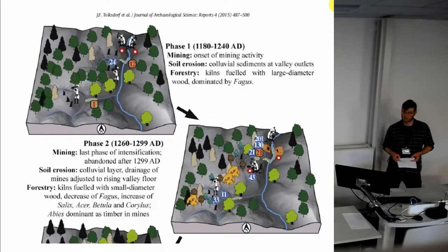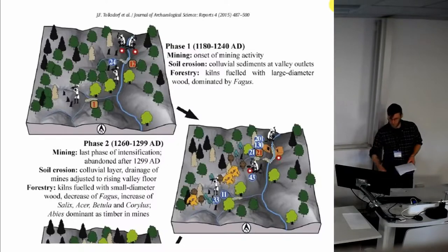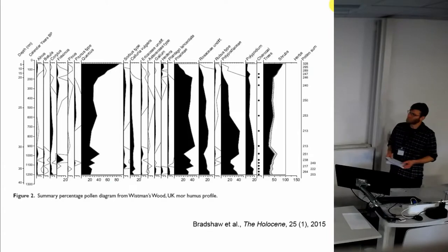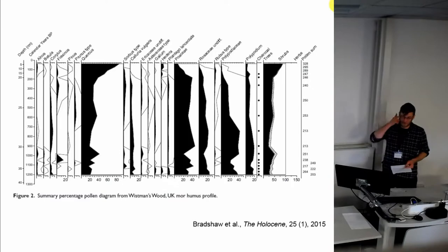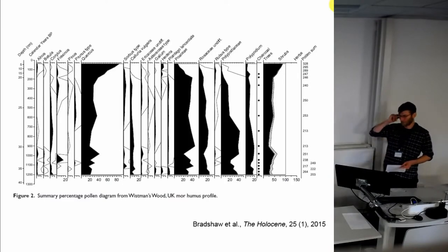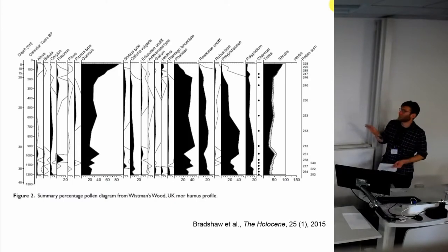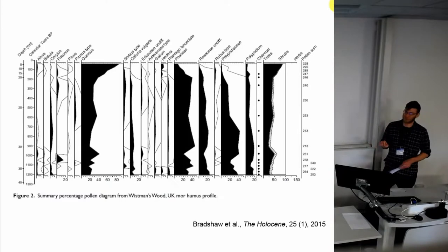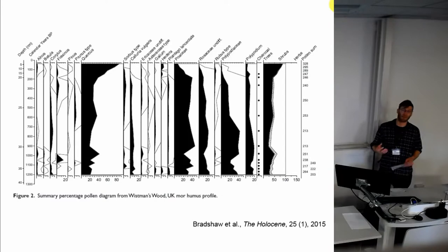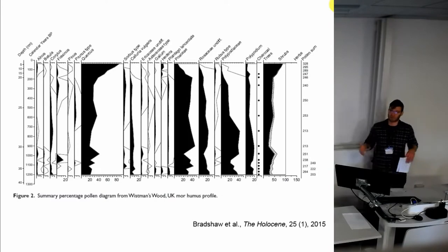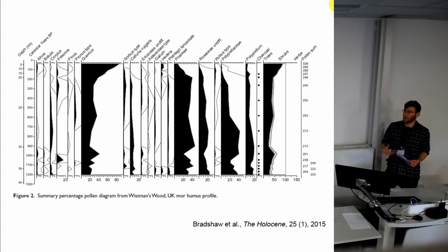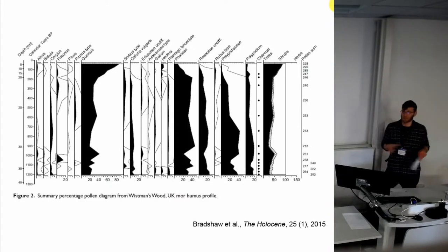At worst it is ignored entirely, at best questionably acknowledged. Here is an example: a pollen diagram. This is excellent work done by Bradshaw et al. This pollen diagram was produced by Claire Jones. The study was looking at a small oak woodland in Devon called Wistman's Wood, which is reputed as an ancient woodland assumed to have a very long ecological history and long period of stability. The study showed that actually its current formation is a more recent phenomenon.